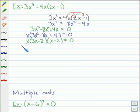So this time we have three factors we have to set equal to zero: x equals zero, or 3x minus 2 equals zero, or x minus 2 equals zero.